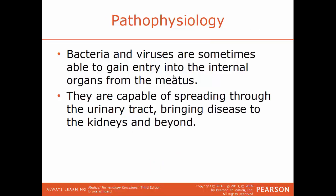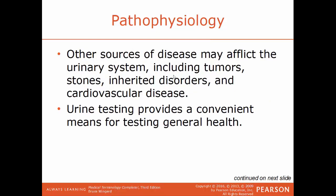Now I'll talk about some pathophysiology of the system. Sometimes bacteria and viruses are able to gain entry into the internal organs from the meatus, through the opening in the urethra. They're capable of spreading through the urinary tract, bringing disease to the kidneys and even beyond. Other sources of disease may afflict the urinary system, including tumors, stones, inherited disorders, or cardiovascular disease. Testing a person's urine is a good, convenient way to assess overall general health.